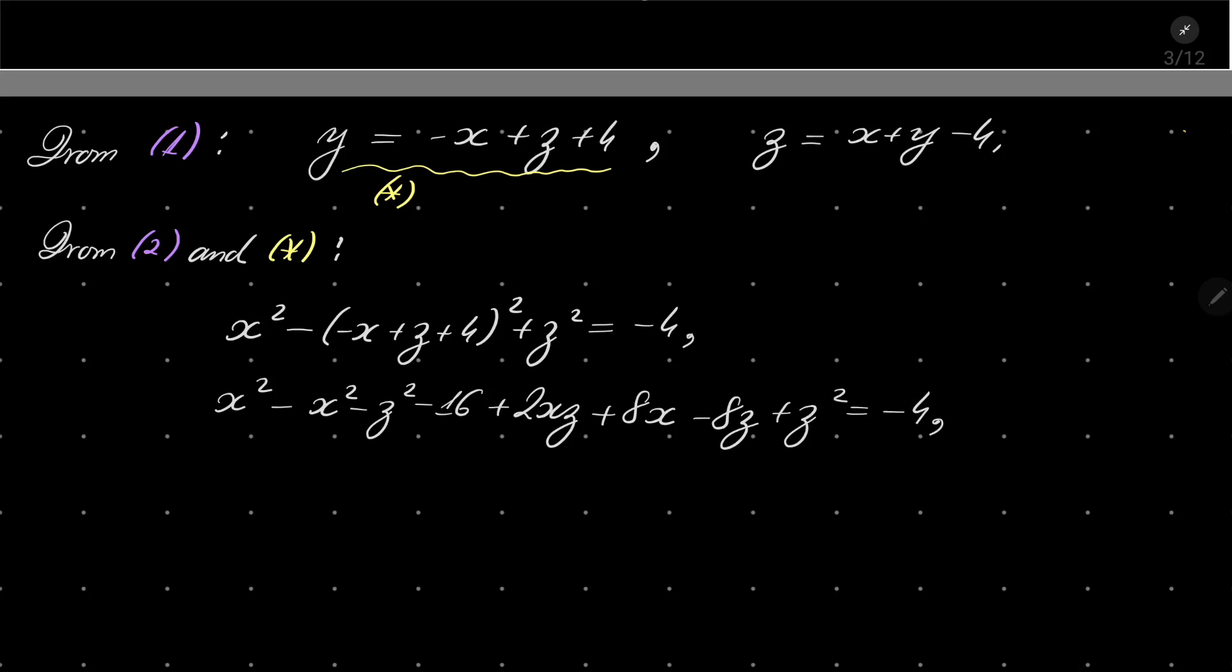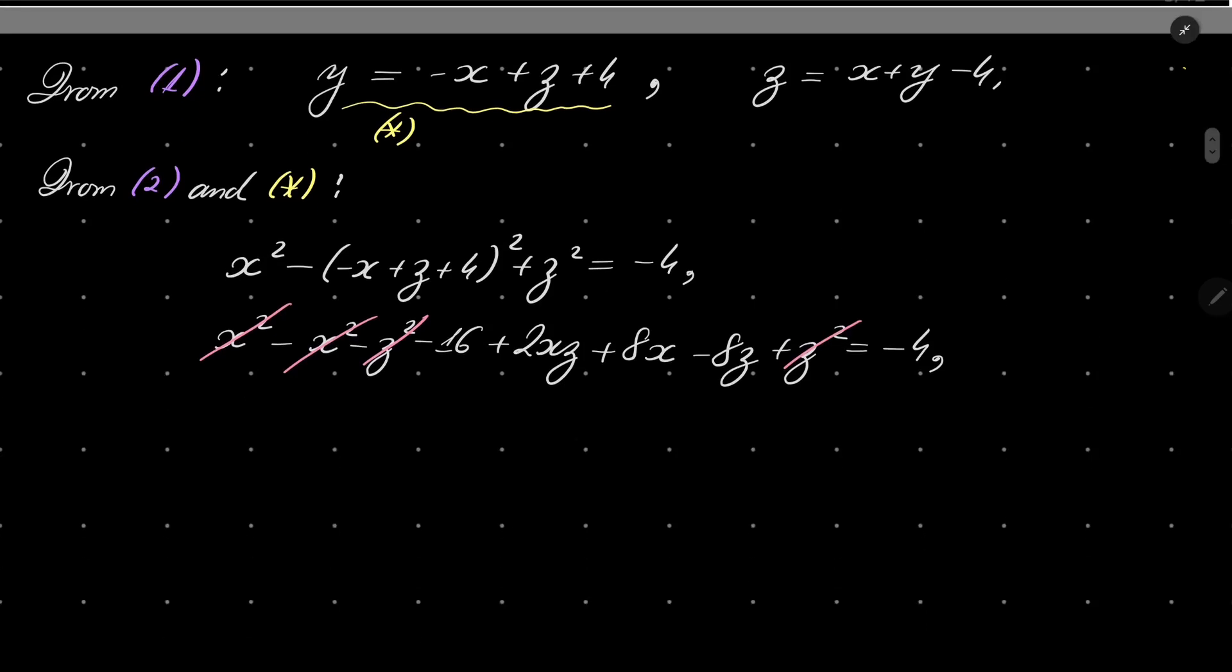After simplifications, x squared and z squared cancel out. We can divide by 2, and now we know that xz plus 4x minus 4z equals 6.